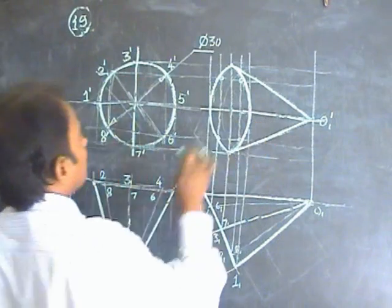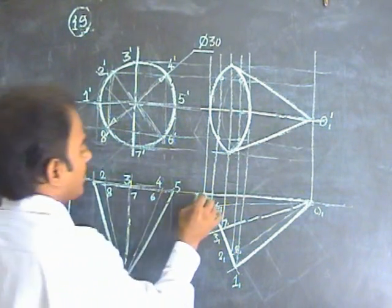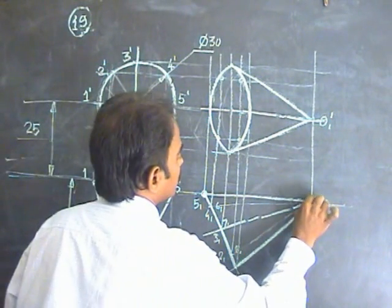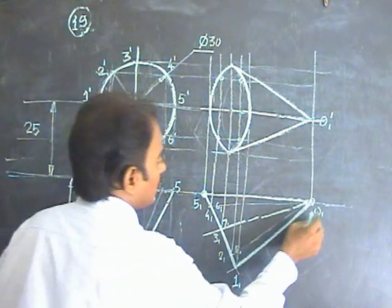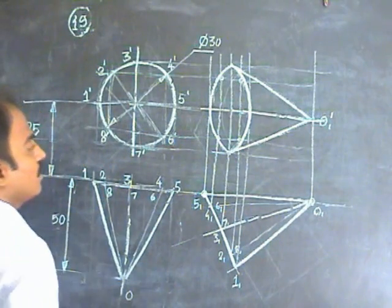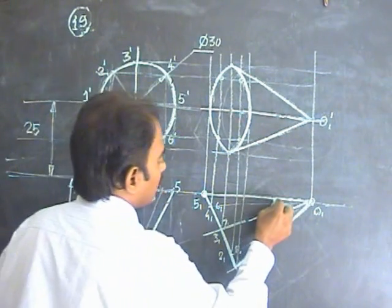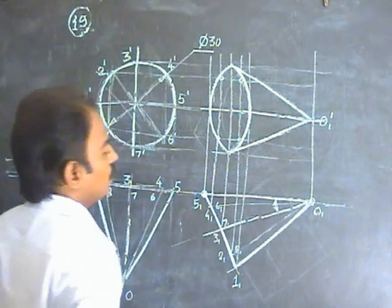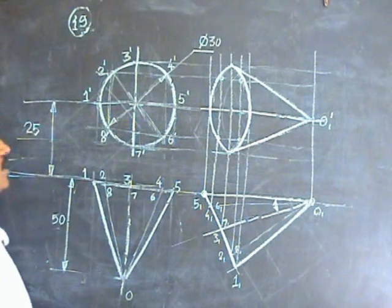Now you have the field view solid. It is a cone. It is resting on VP with one of its generator. The generator is 5o. Here you have 51 and the other end you have o1. So obviously, the axis is parallel to HP and inclined to VP. You can find out the inclination of the axis with the VP as well. This can be found out and it can be written separately.